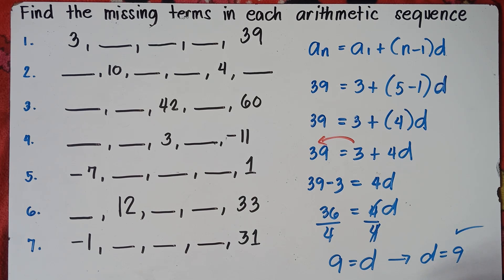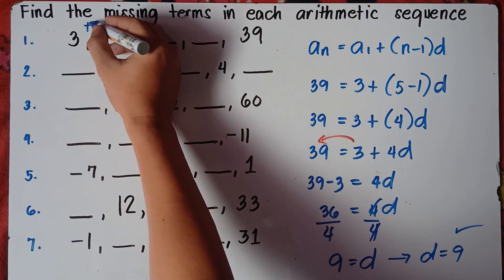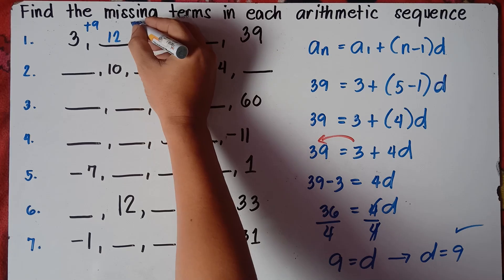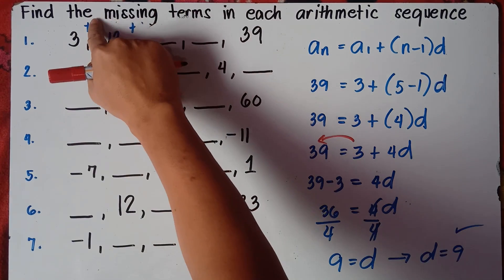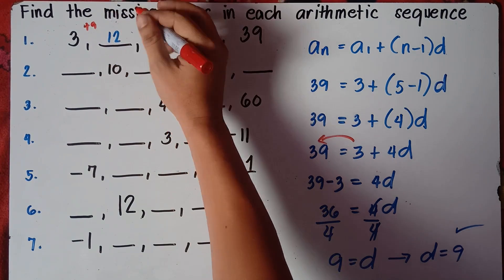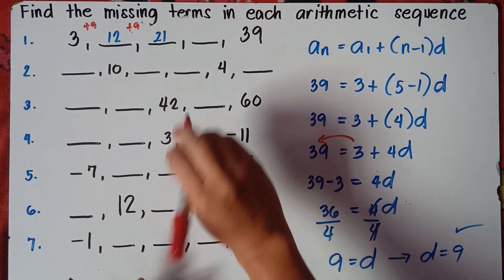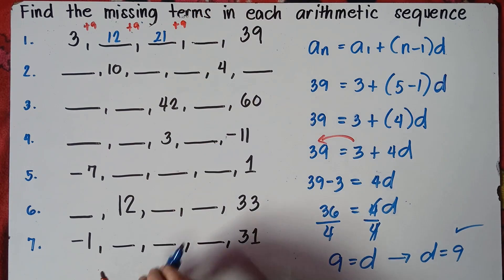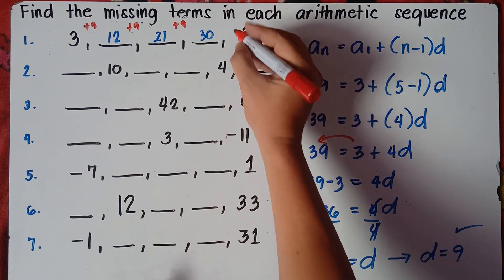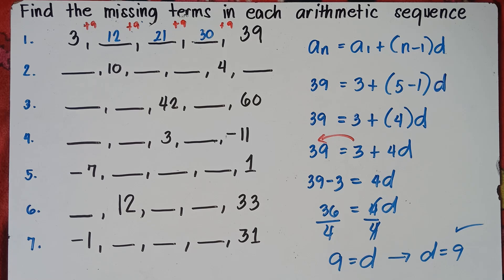So the common difference is 9. We now add 9 to 3: 3 plus 9 is 12, 12 plus 9 is 21, 21 plus 9 is 30, and 30 plus 9 is 39. Our answer is correct! That's how you find the missing terms — you just need to use the formula.